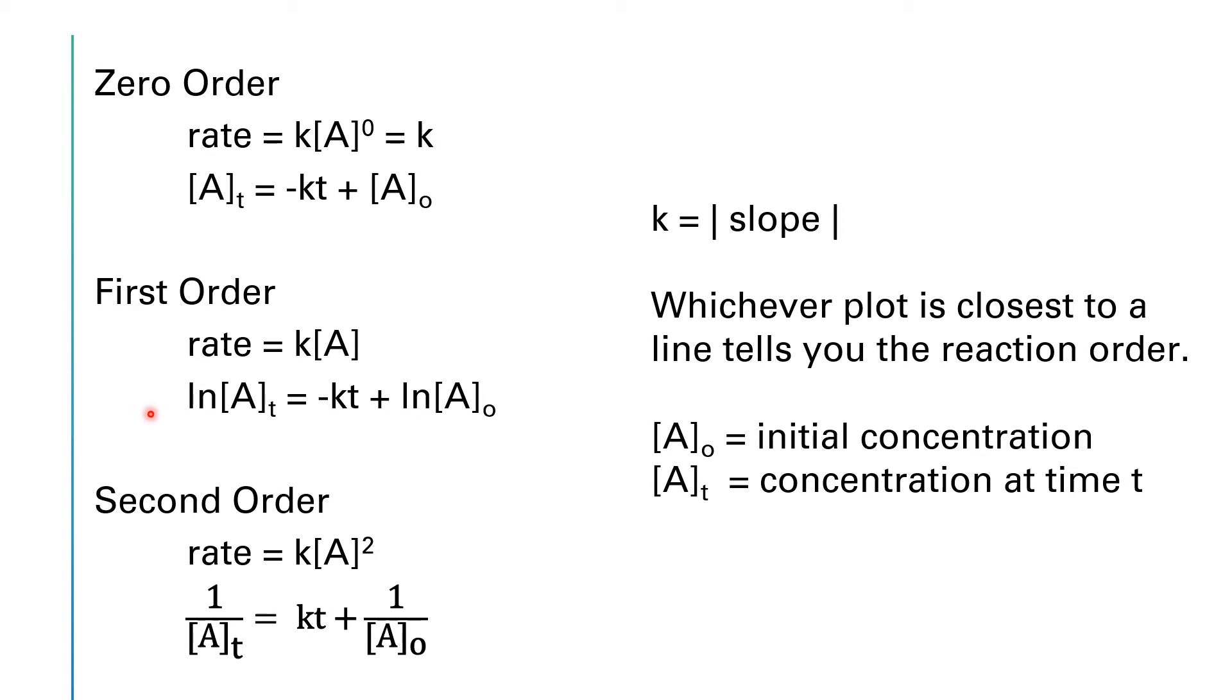Then last but not least, we have the second order reaction. For our second order rate law, we have the rate is equal to k times [A] squared. And if we integrate that with respect to t, we get 1/[A]_t is equal to kt plus 1/[A]_0.